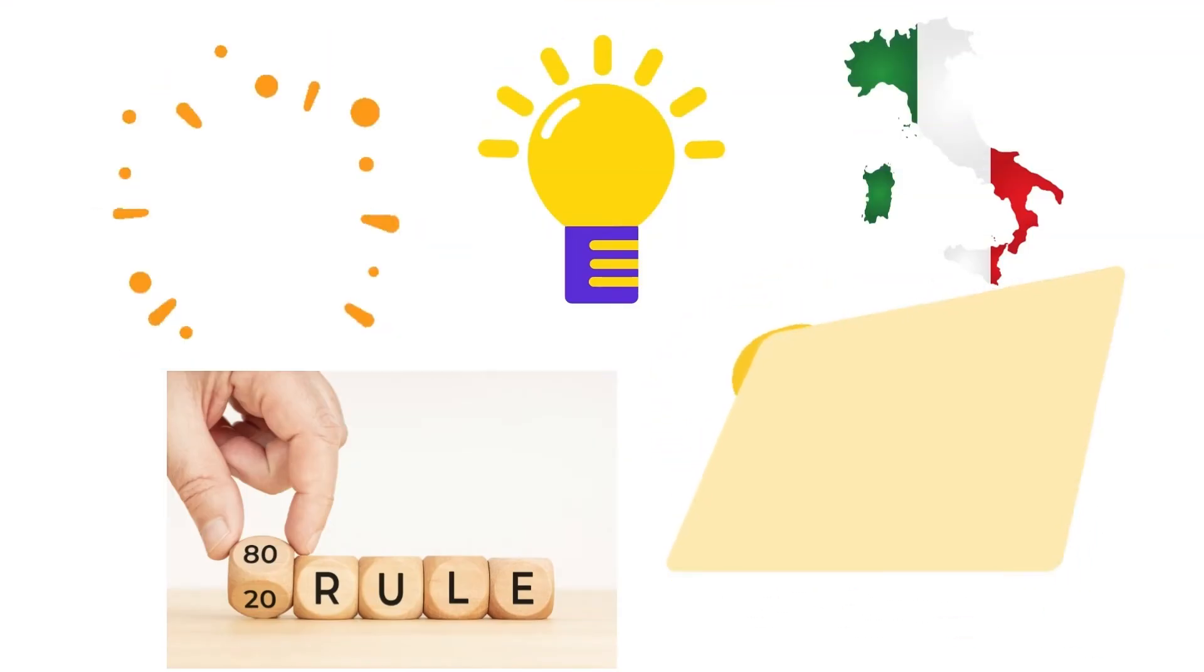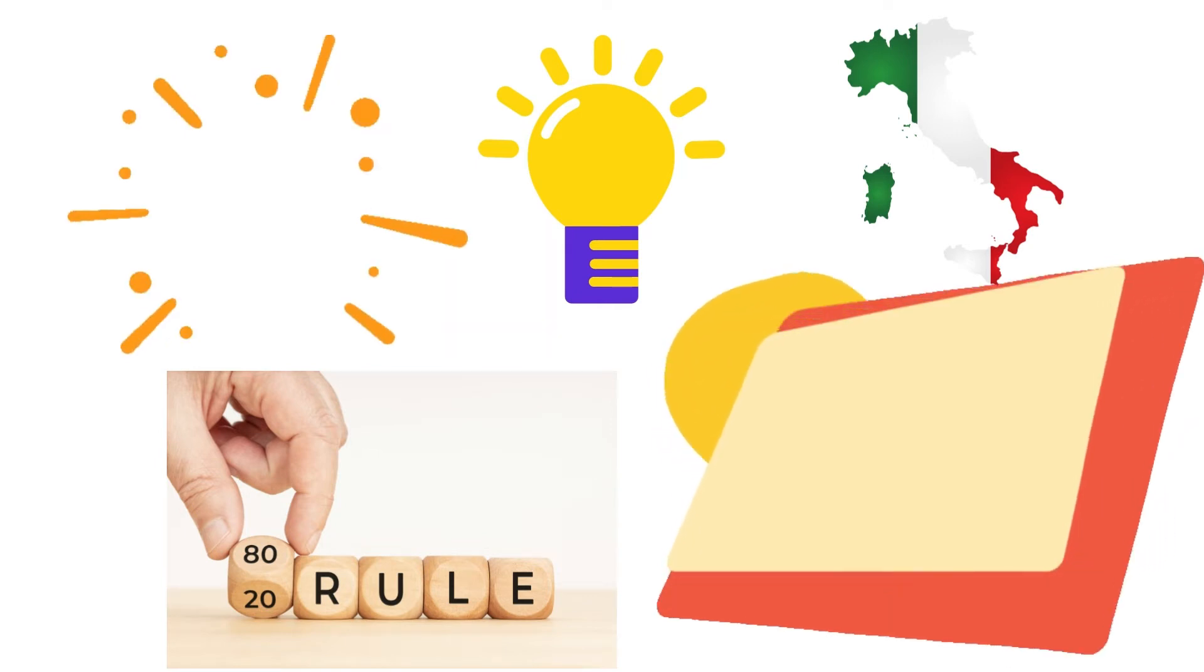Dr. Joseph Juran, a well-known expert in operations management in the 1940s, used the 80-to-20 Rule to quality control for commercial manufacturing. He showed that 20% of the issues with manufacturing techniques were responsible for 80% of product faults.